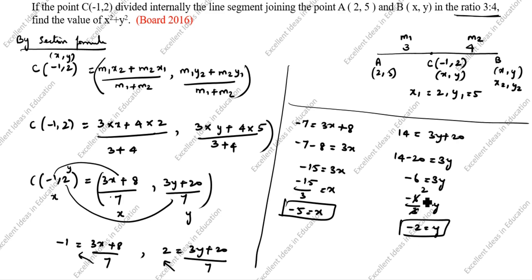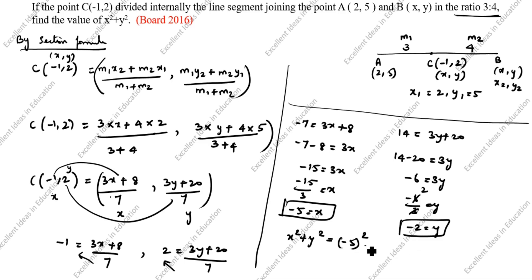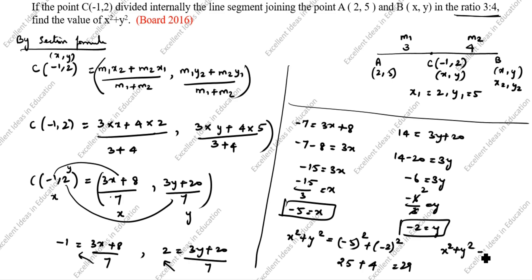Now we have X = -5 and Y = -2. So X² + Y² = (-5)² + (-2)² = 25 + 4 = 29. Therefore, the value of X² + Y² is equal to 29. This is the answer.